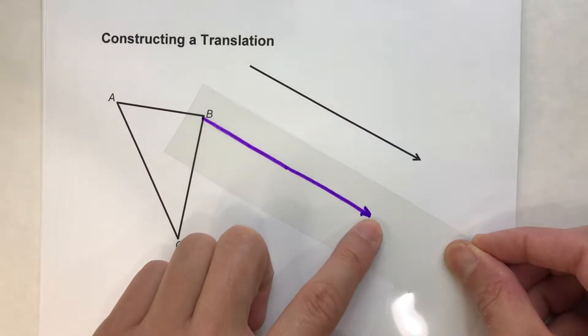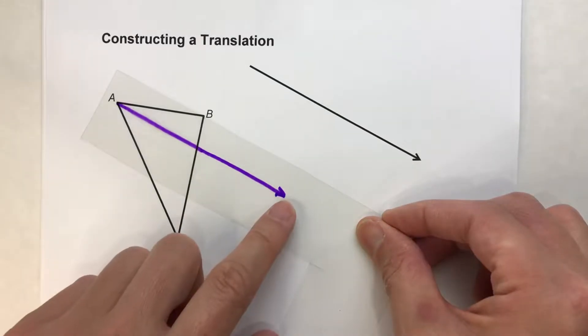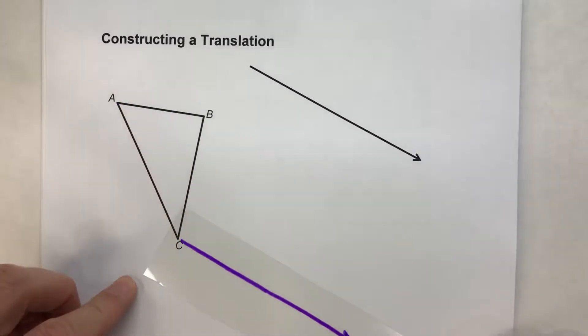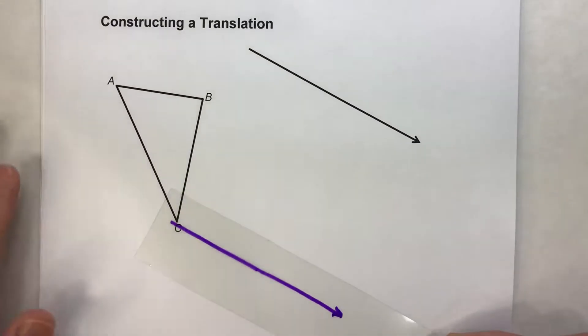So B is going to slide over here for B prime. Here's where A prime is going to end up right there, and we slide this here. C prime is going to end up way down here.